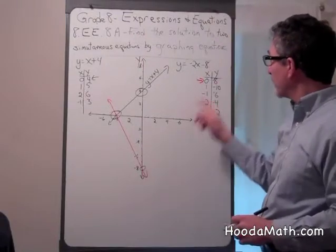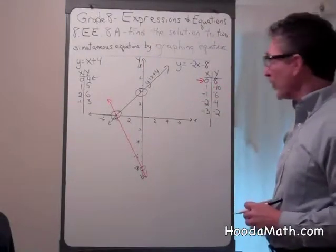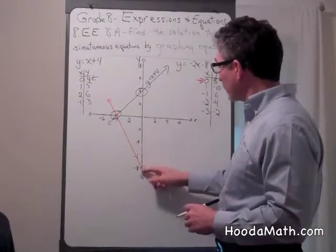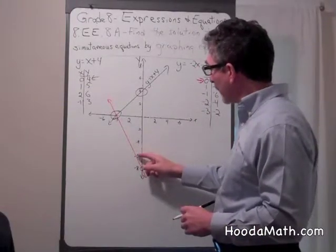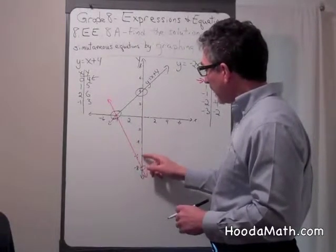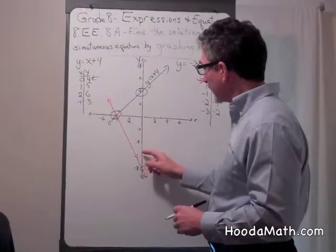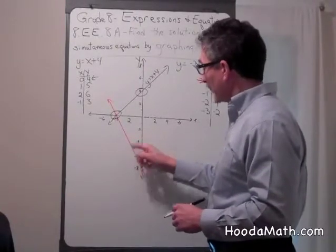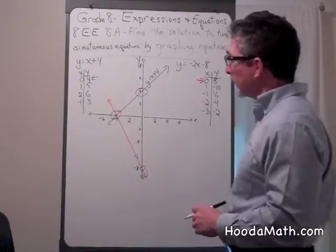This is the y-intercept for this particular equation. And then if I went up, the slope is negative 2. So if I go up 2, I go to the left 1. Up 2, to the left 1. Up 4, to the left 2, etc. I make the line.